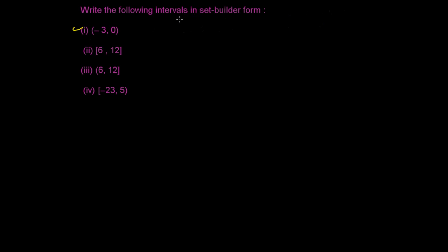In short, if you are getting a smaller bracket — that is an open bracket — it means you are not going to include that number. And a closed bracket means you are including that number. So here I'm seeing a smaller bracket on both sides, which means it's an open interval.